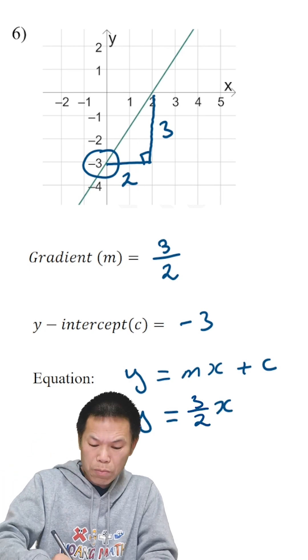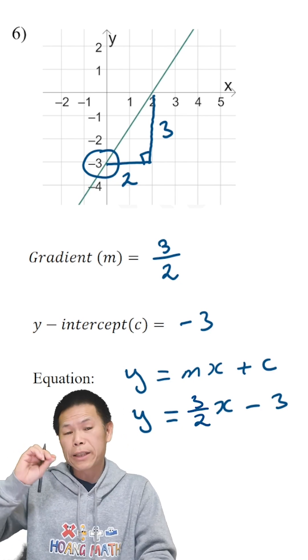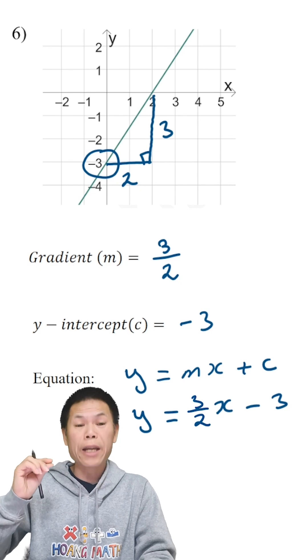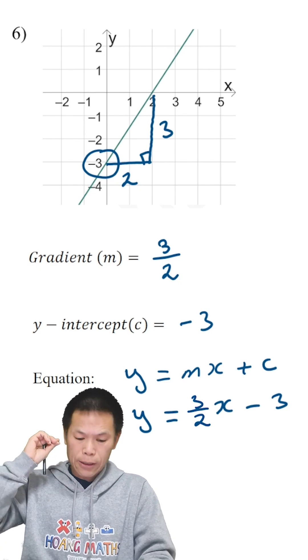c is negative 3, so we minus negative 3, because if you plus minus negative 3, it's the same as negative 3. But the equation of this straight line here is y equals 3 over 2 x minus 3.